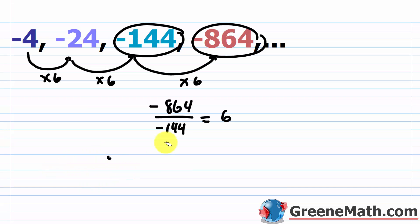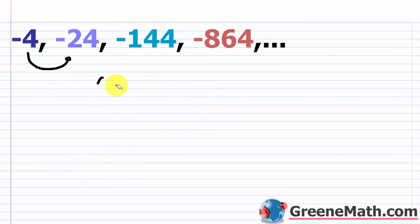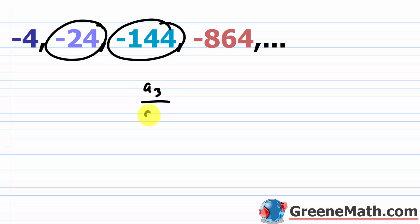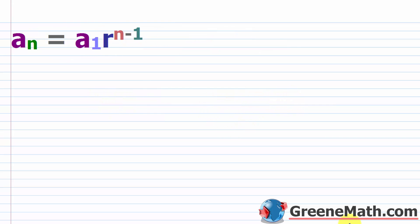The same thing works if you pick any other pair of adjacent terms. For example, taking a sub 3 over a sub 2 gives negative 144 over negative 24, and R equals 6 as well.